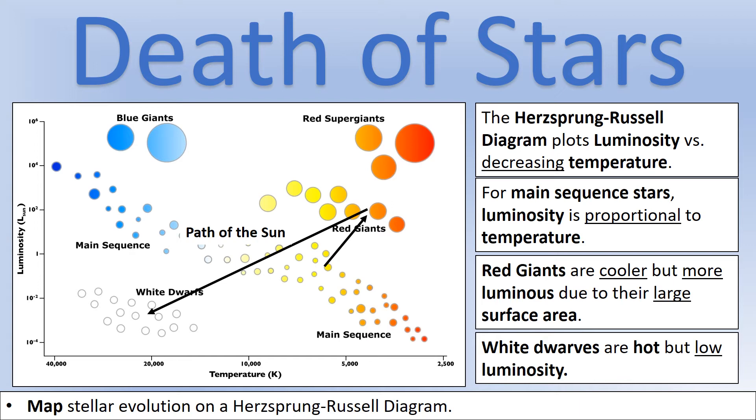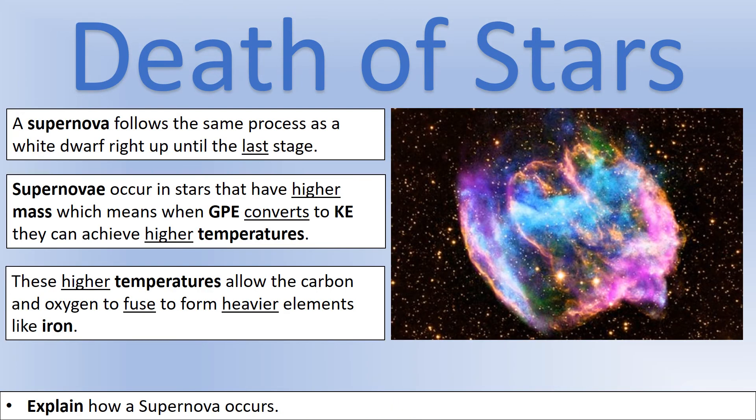So that's our formation of white dwarfs and our Hertzsprung-Russell diagram. Let's look at what's frankly the more interesting part of star death, looking at supernovae, neutron stars and black holes. So a supernova follows the same process as forming a white dwarf right up until the last stage. So a white dwarf stops when we have carbon and oxygen because it's not high enough temperature to fuse those two nuclei. However, if the mass is big enough, we can convert enough gravitational potential energy into kinetic energy, we get higher temperatures. And these higher temperatures do allow carbon and oxygen to fuse, and they form heavier elements like cobalt, which all end up in the form of iron, generally speaking, in the core there. So instead of carbon and oxygen, we've now got an iron core.